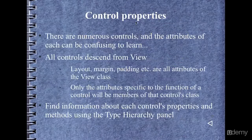Let's talk about control properties. There are many different controls, and memorizing all their attributes is nearly impossible. But since all controls descend from view, layout, margin, padding, and other common attributes are attributes of the view class. Only the attributes specific to a control's function will be members of that control's class — and this is good object-oriented programming.